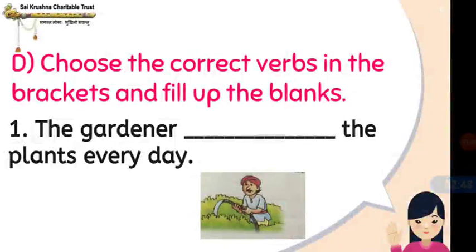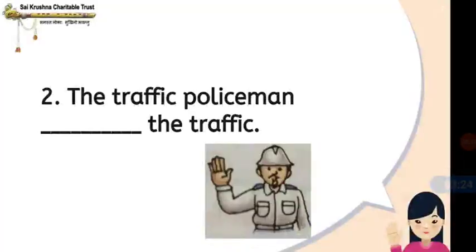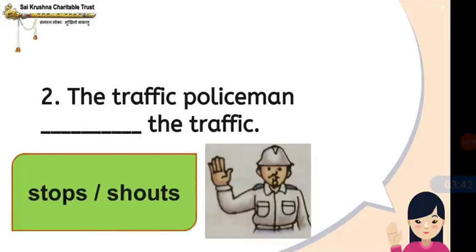Next we have D main: Choose the correct verbs in the brackets and fill up the blanks. The first question is: The gardener dashes the plant every day. Can you guess from the picture? The options are: waters or plants. The answer is waters — the gardener waters the plants every day. The second question: The traffic policeman dashes the traffic. The options are stops or shouts. The traffic policeman stops the traffic — he stops the traffic.